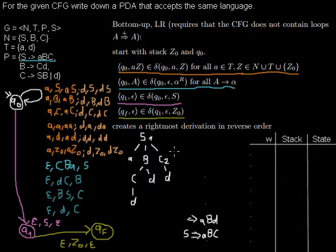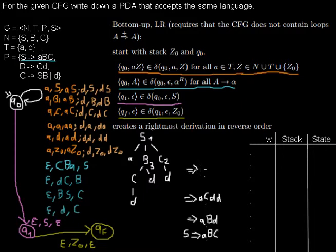Let me write down the numbers indicating the order. First I exchanged S by ABC, so S was done first. Then I exchanged C by D, so C was done second. Now I want to process B and exchange it by CD — so B was done third. Then I exchange the remaining C by D to get three D's, so that C was done fourth.